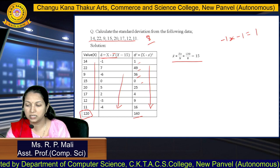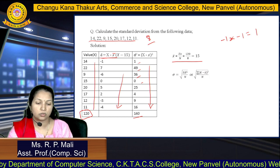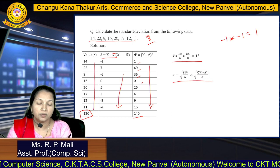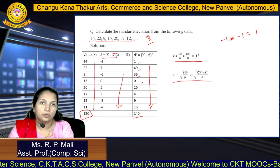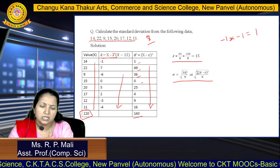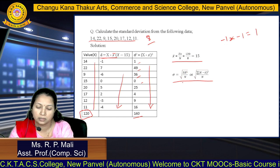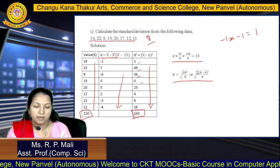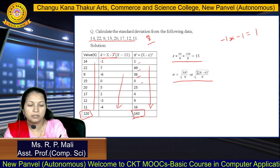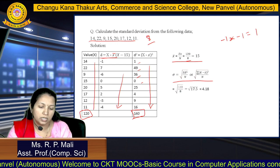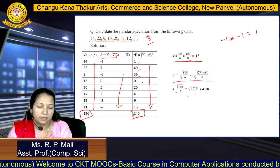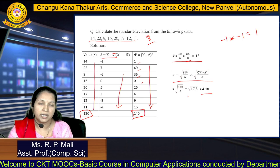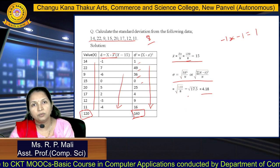After finding all squared deviations, we find the summation of this D-square column. The formula for standard deviation for individual series is sigma equals square root of summation D-square divided by N. The summation of D-square is 140, divided by N which is 8. After calculation, you get sigma equals 4.18. This completes the individual series example.